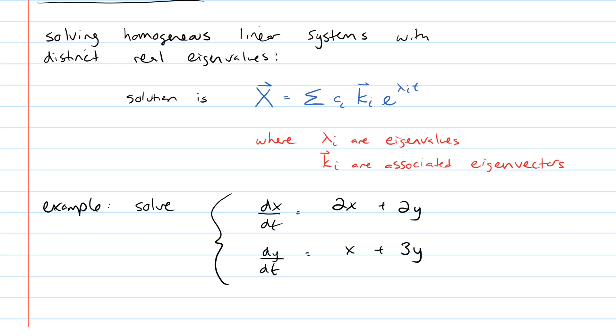So our example, we're going to solve dx/dt equals 2x plus 2y, and dy/dt equals x plus 3y, and you can tell that this is homogeneous because we're not adding any terms that only have t in them. That would be our f of t's.